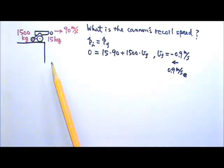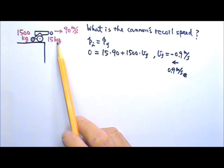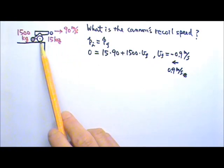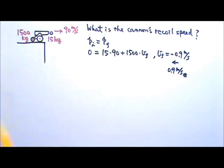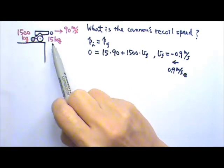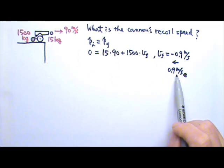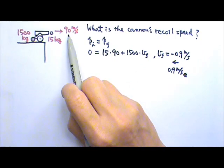From this, we can also see why we need the cannon to be much, much heavier than the cannonball. In order to give the cannonball the same amount of momentum, a heavier cannon would have a smaller and safer recoil speed. In this case, the cannon has a mass that is a hundred times that of the cannonball, so its speed is one one-hundredth of the cannonball's speed.